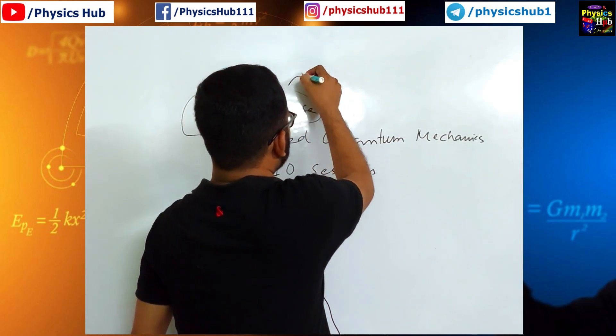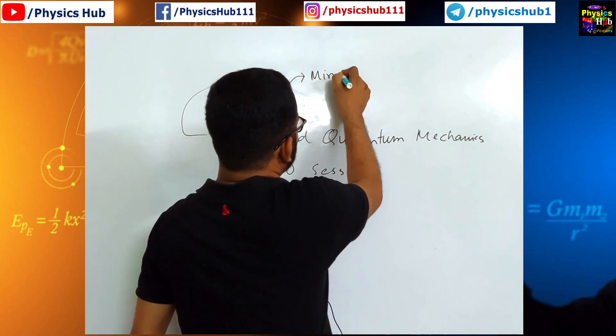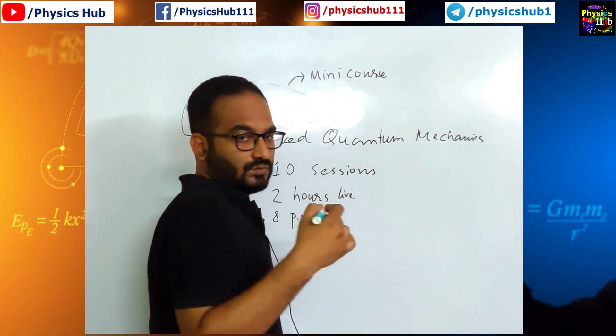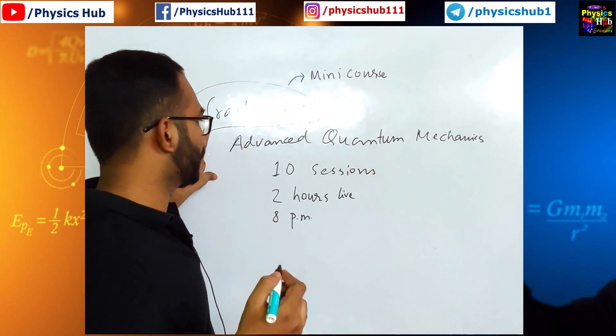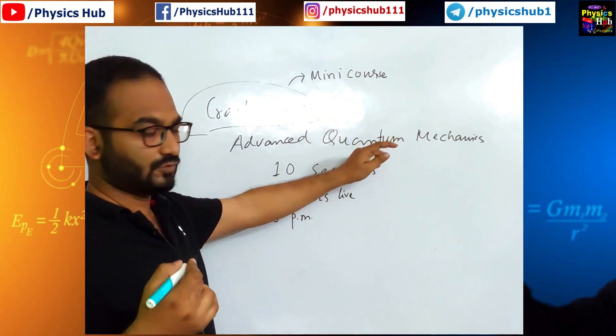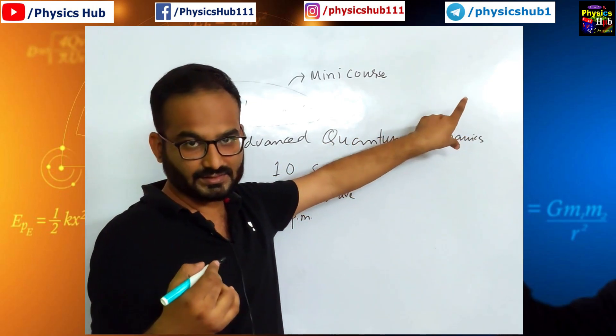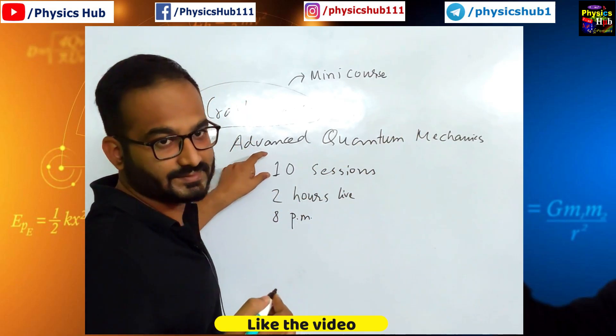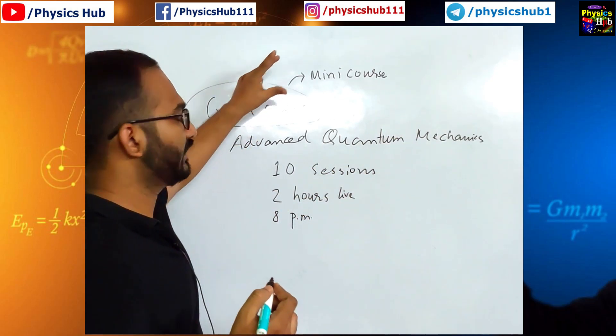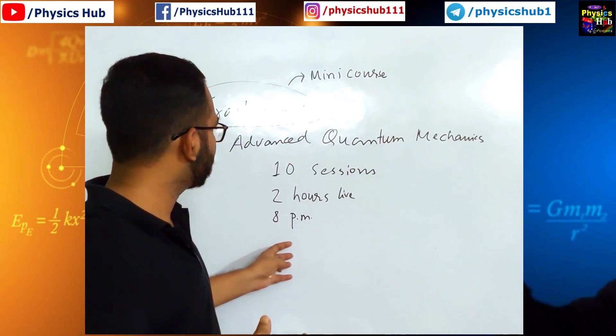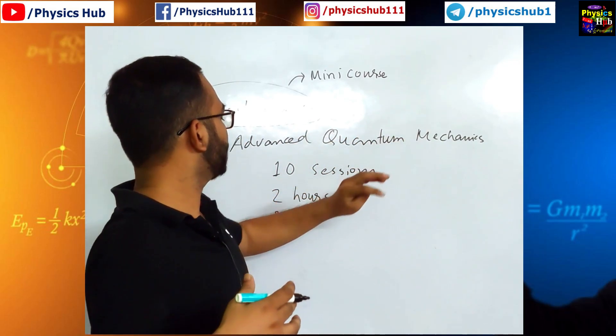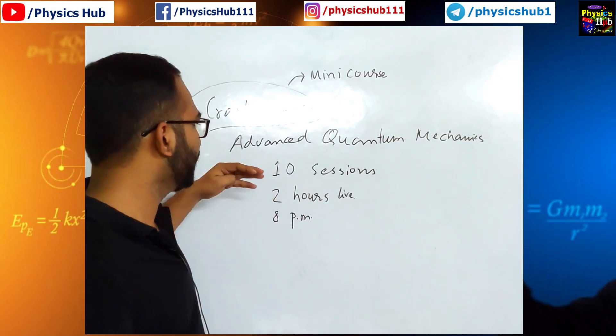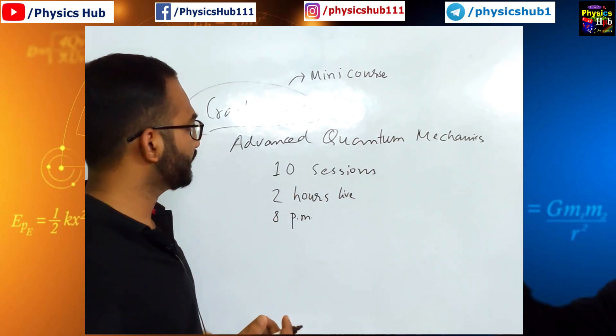This is a mini course, and this is a concluding course to a previous digital course on quantum mechanics. Those who have attended the previous quantum mechanics class, there were around 35 lectures. And these are 10 additional sessions which are going to be added as a separate course. In this advanced quantum mechanics course, these extra 10 sessions will cover mainly the advanced topics of quantum mechanics.